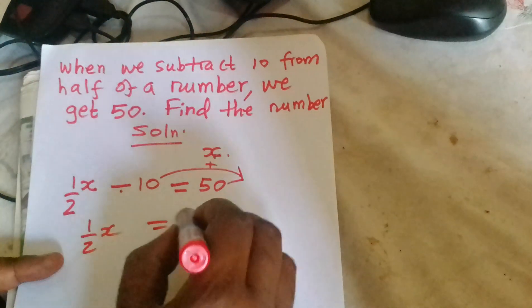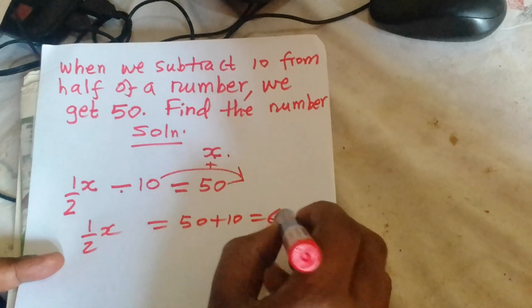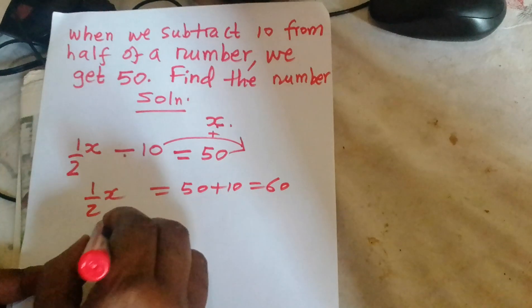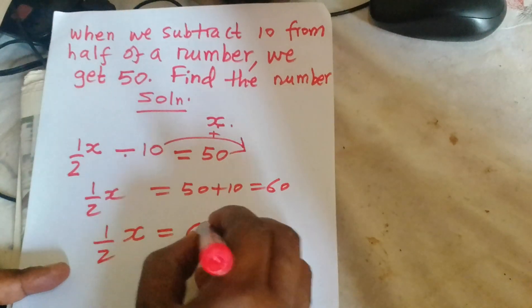So, a half x will be equals to 50 plus 10, which is going to 60. So, a half x equals to 60.